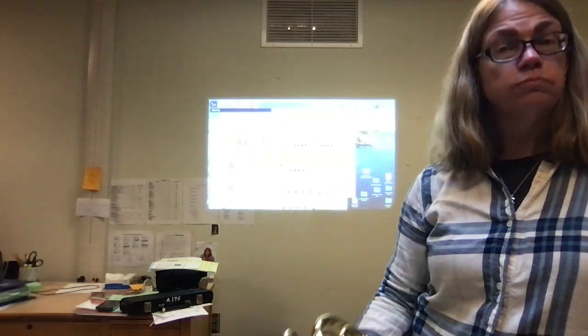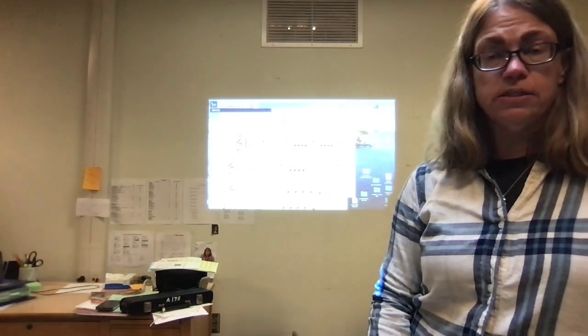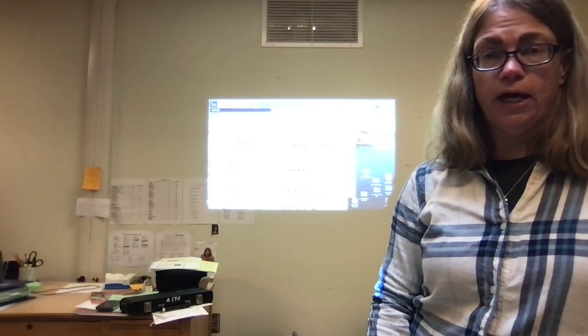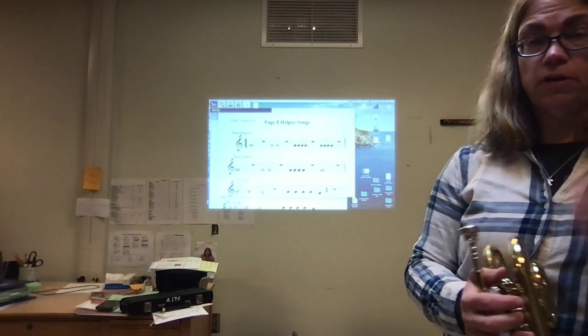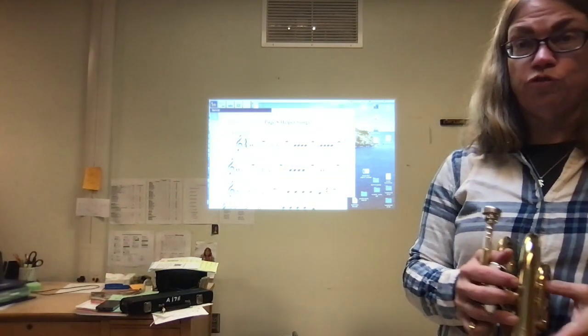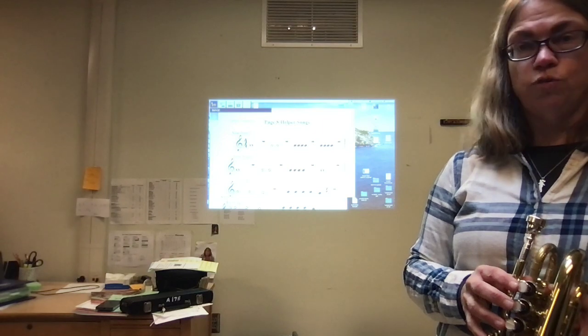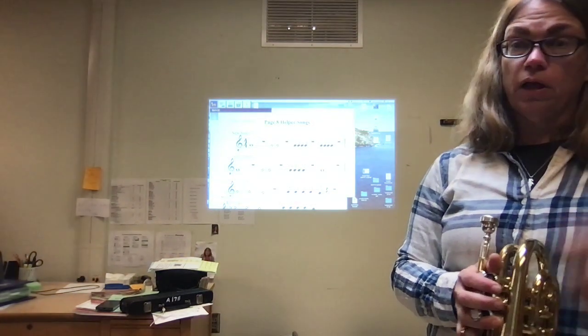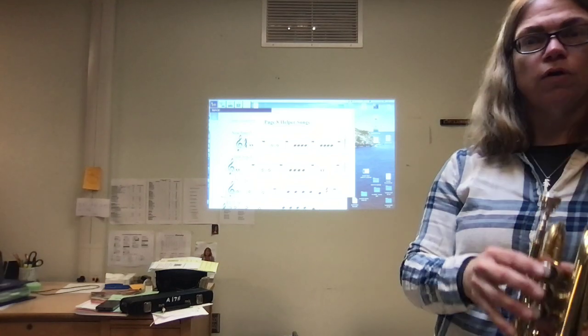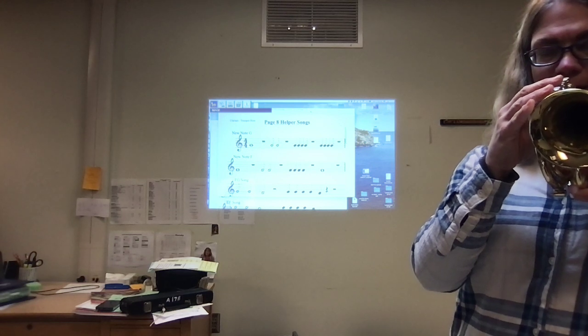So I thought we would try the first two songs together. This is New Note, whatever it is for you, and it's different for each instrument. Let's try the first line. For trumpets and clarinets, it's New Note G. For low brass and flute and percussion, it's New Note F, and for saxophones, it's New Note D. Let's give it a try. Horns, it's New Note G also, sorry about that. 1, 2, ready, go.